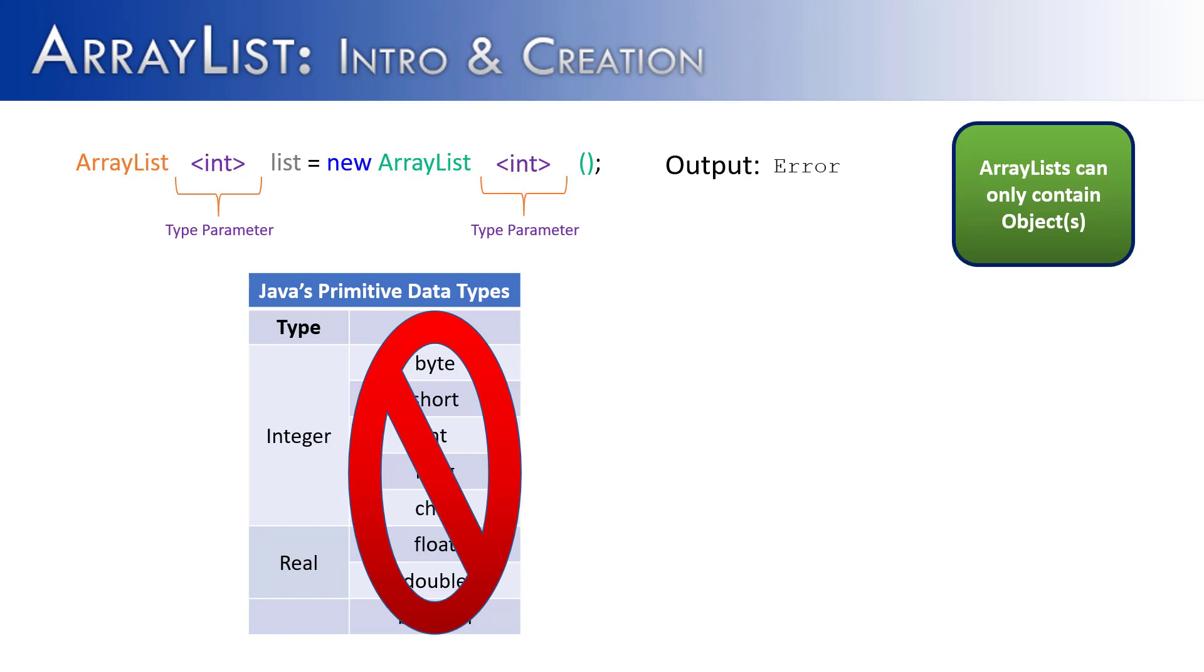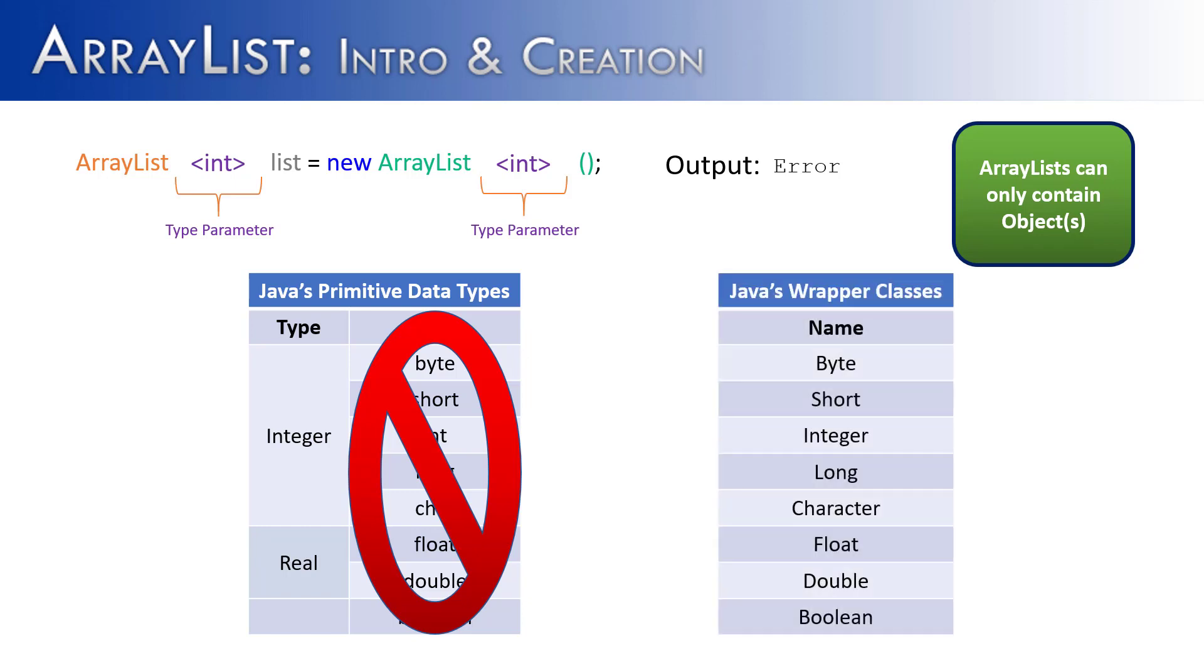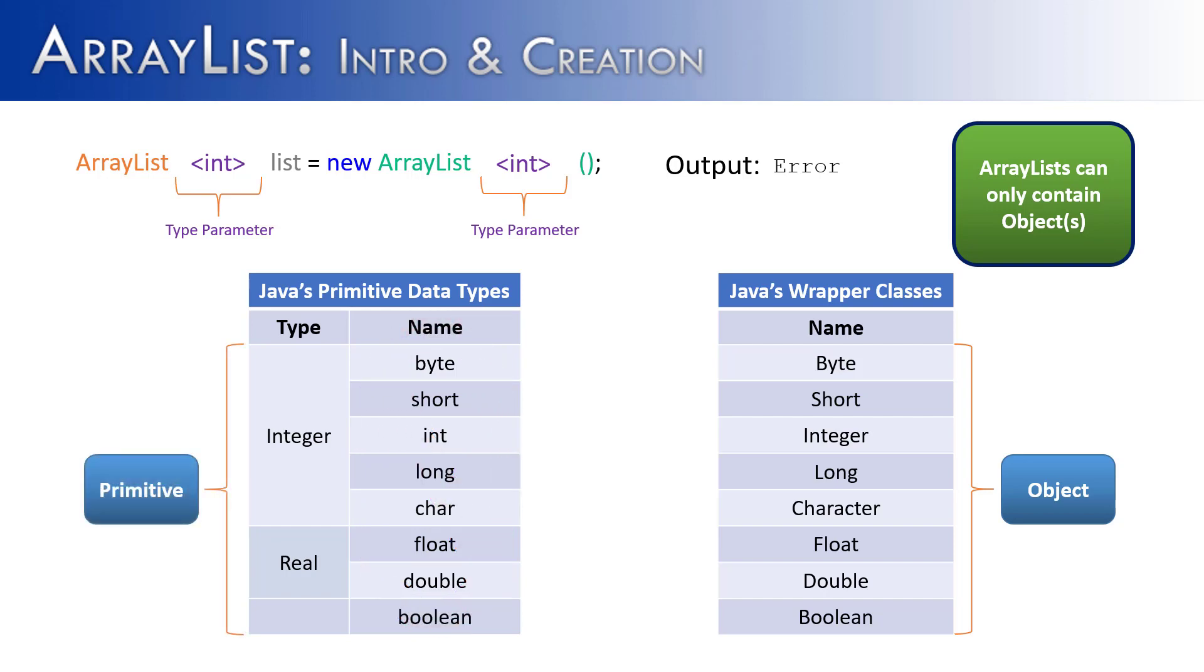Well fortunately, there is a solution for this. Java has created wrapper classes with some very familiar names: byte, short, integer, long, character, float, double, and Boolean. And the advantage to using a wrapper class is that they are objects, and they can go inside of an ArrayList. And you'll notice for every wrapper class there is a corresponding primitive, or for every primitive there is a corresponding wrapper class.